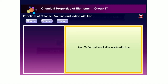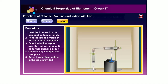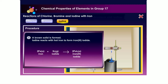Let us now find out how iodine reacts with hot iron. A brown solid is formed. Iodine reacts with hot iron to form iron(III) iodide.